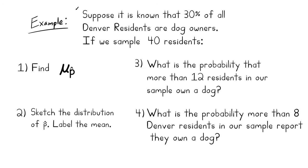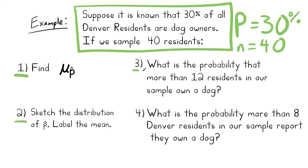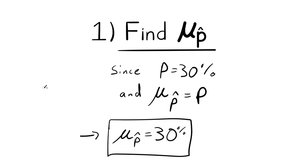Suppose it is known that 30 percent of all Denver residents are dog owners. If we sample 40 residents, here are a few problems to look at. If you want to try these on your own right now, that might be a good idea — from what you've seen in this video, you should be able to do the first three problems.